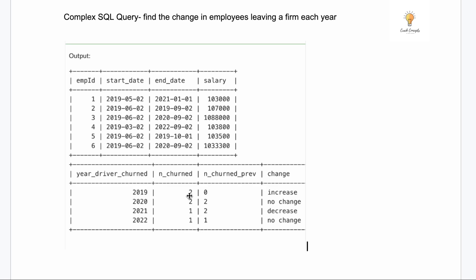The third step is straightforward: once you have the count for the current year and the previous year, you simply compare them. If the previous year's count is less than the current year, there's been an increase. If they're equal, it's no change. If the current year's count is less than the previous year, there's a decrease. We can handle all of this with basic greater-than, less-than, and equal-to comparisons.